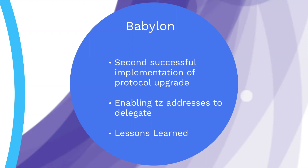One of the biggest changes from Babylon was consolidating the Tezos wallet address structure. Before, when Tezos launched, you'd get two wallet addresses: a TZ address that functions as a normal address for sending, receiving, and baking, and also a KT address that allows you to delegate your tokens. It was a bit confusing, so the community proposed consolidating the KT address and TZ address into just one address where you can send, receive, bake, and delegate. When all the wallets launched this required a lot of coordination with wallet providers to update their UIs, and lots of lessons were learned from this huge protocol change.